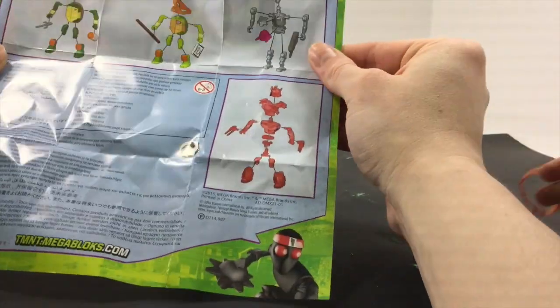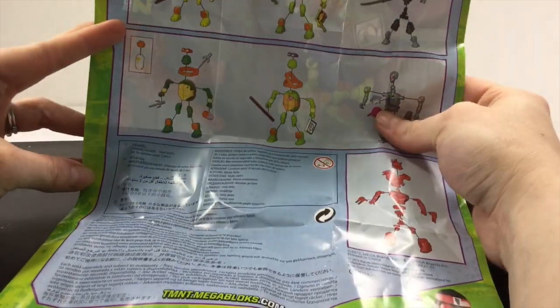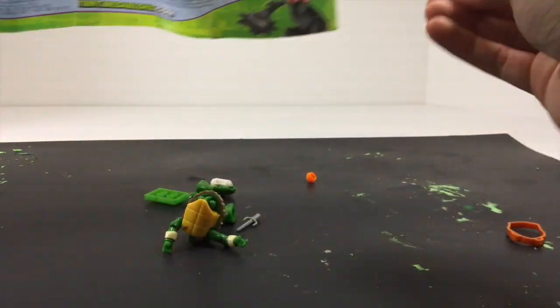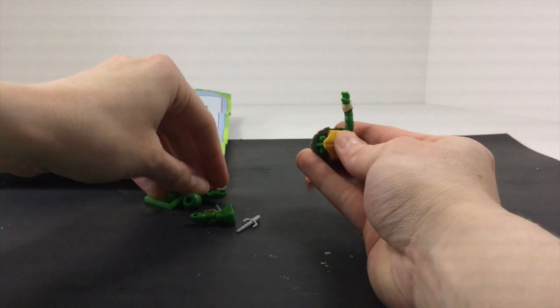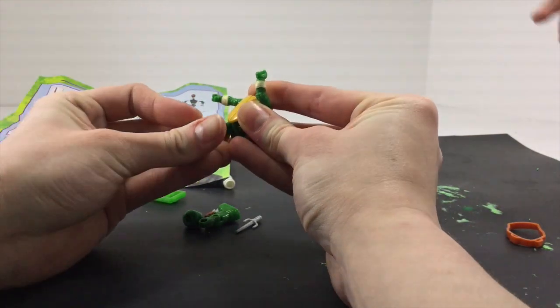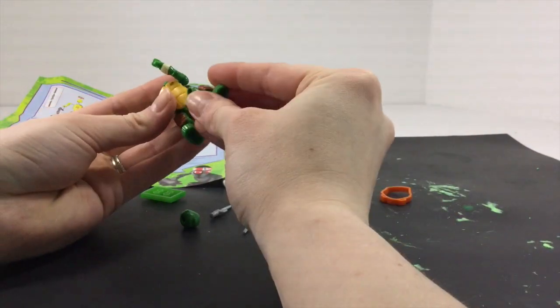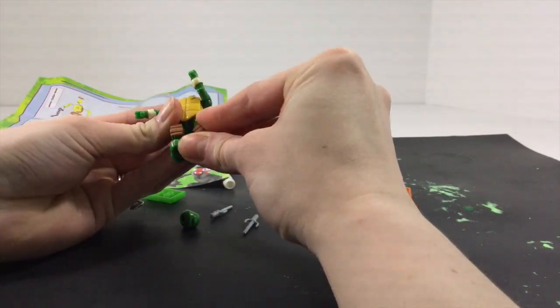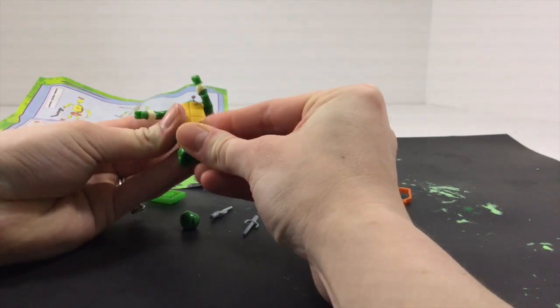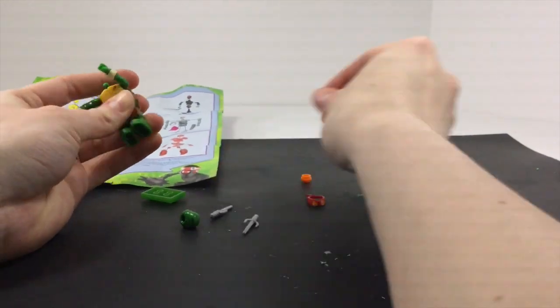Mom, this is the one I got. So these are the instructions we're going to look at. Okay, so we need to get the legs. Where's the head? You lost his head. Okay, he's got this in his hand.